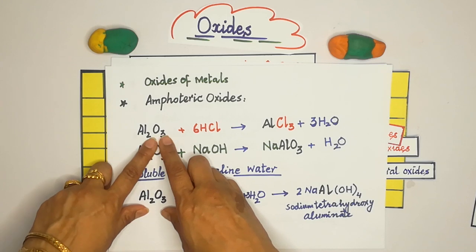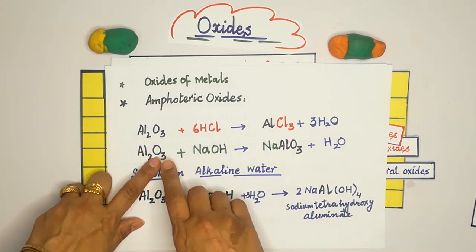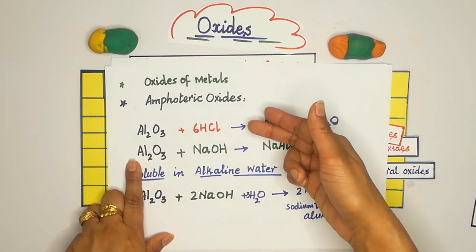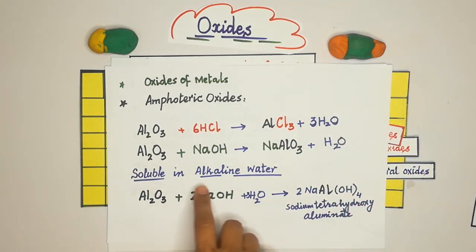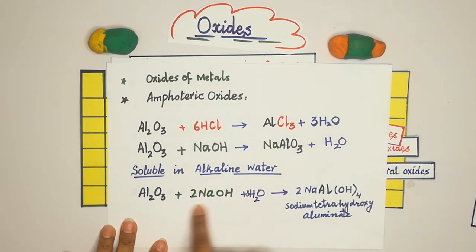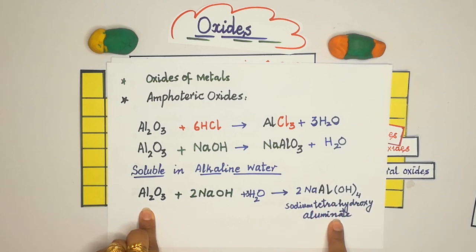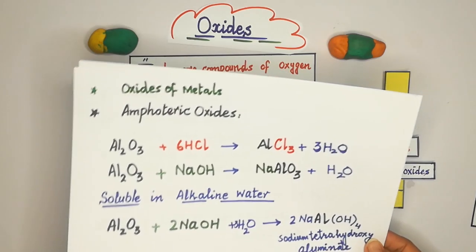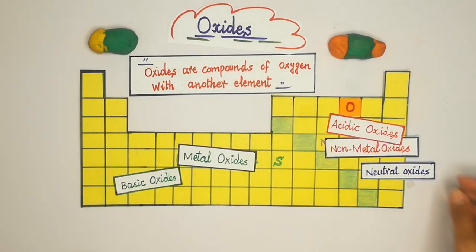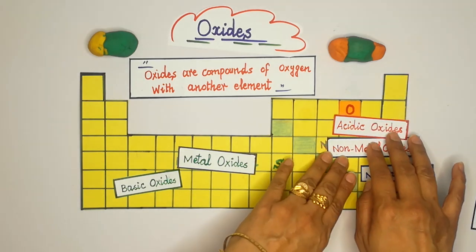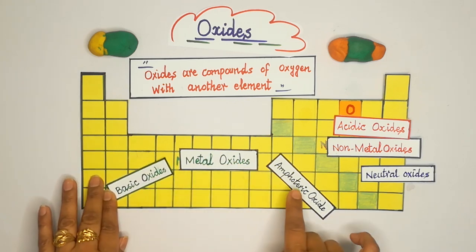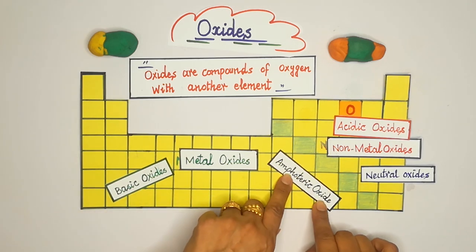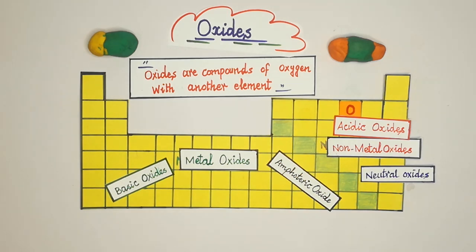Aluminium oxide Al₂O₃ behaves as a base when reacting with acid to produce salt and water, and also reacts with alkali. Amphoteric oxides are soluble in alkaline water — reacting with alkali in water to produce sodium tetrahydroxoaluminate. Lead oxide is another amphoteric oxide that reacts with both acids and alkalis to produce salt and water. To summarize: basic oxides produce alkaline solutions; amphoteric oxides react with both acids and alkalis.